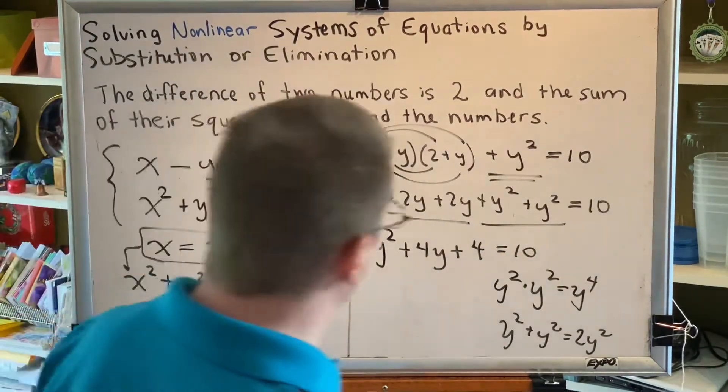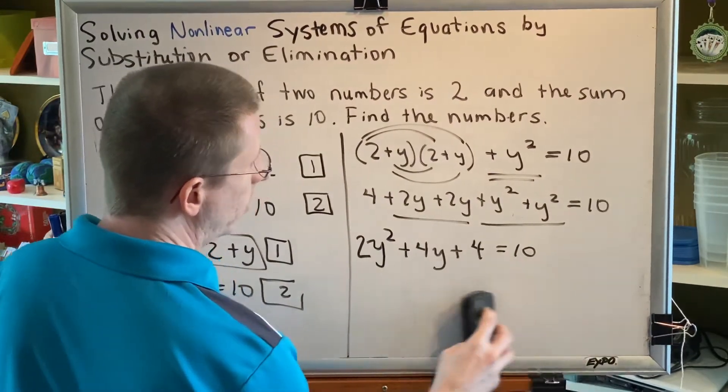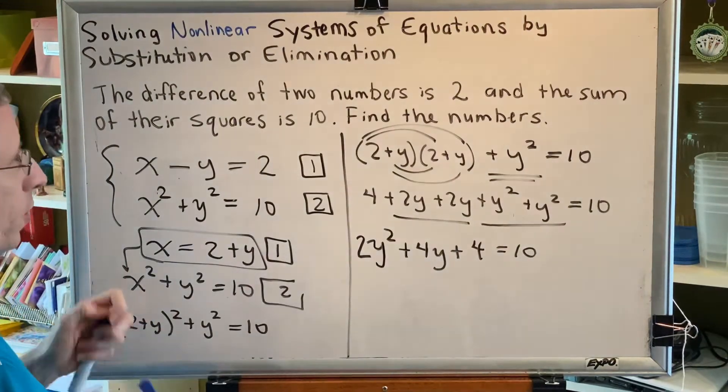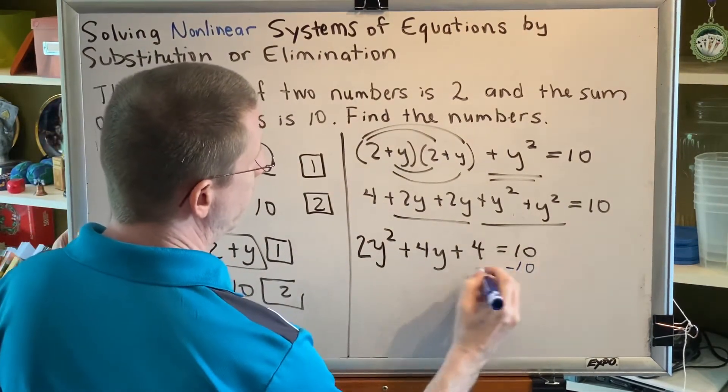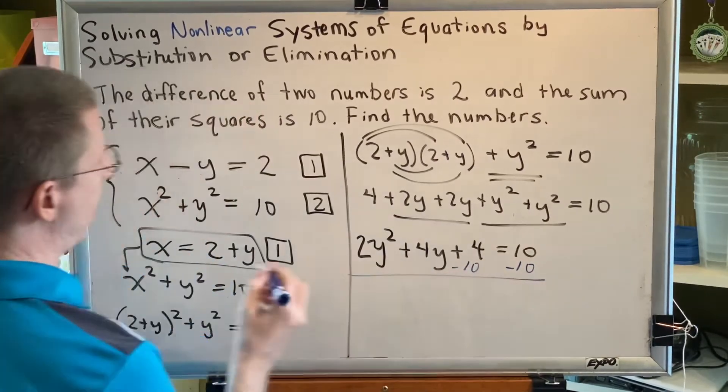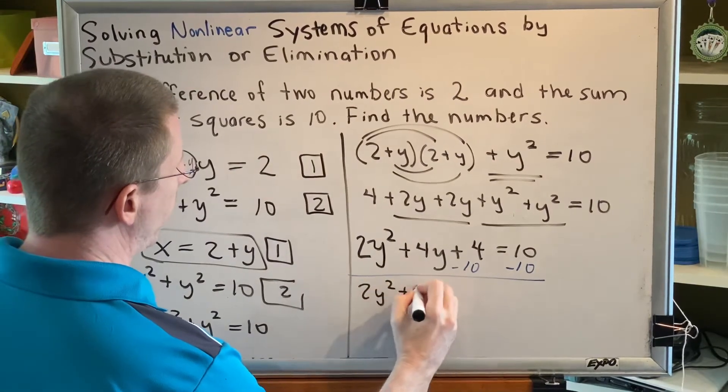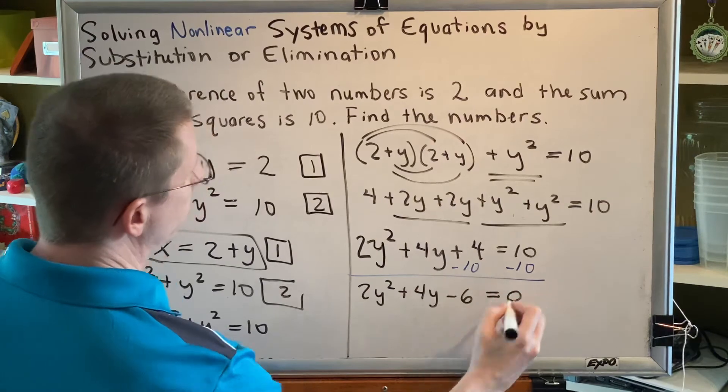This is a quadratic equation in one variable and we have several options for solving it. But the best option, very frequently, is factoring. So let's see if we can get equal 0 and try a factoring technique. If we want equal 0, we need to get rid of this 10. And we do that by subtracting 10 on both sides. So then we will have 2y squared plus 4y minus 6 equals 0.